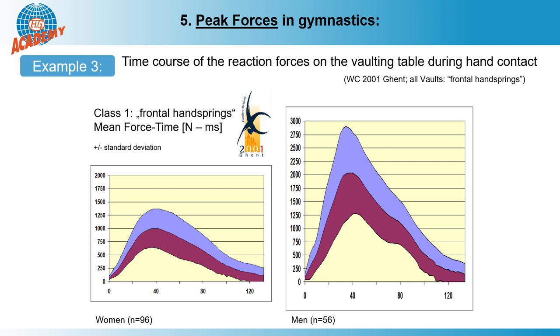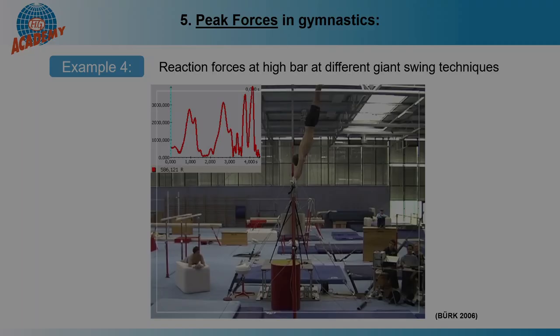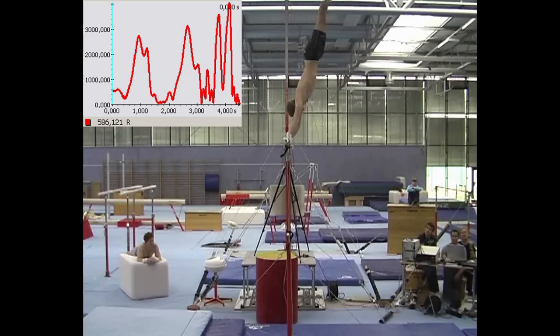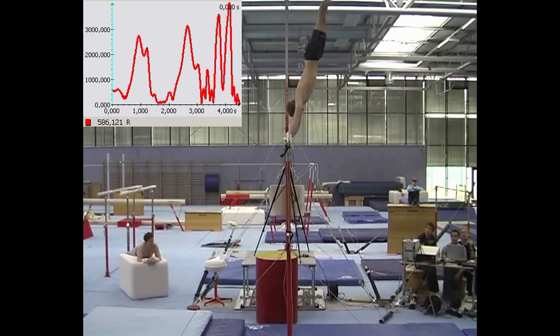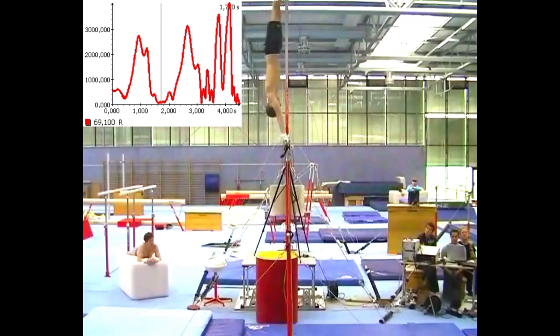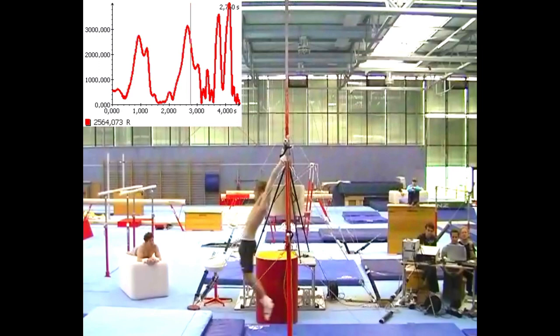The average peak for women is over 2g. The men, who reach the vaulting table with higher energy from the approach, even reach on average about three times their body weight. We observe higher forces on the high bar. In the classic giants, this gymnast has to hold on to the bar with about 3000 Newtons. If he starts with a power giant swing to dismount, he even produces two peaks, the second of which is 4000 Newtons — that is 5.9 times the body weight.